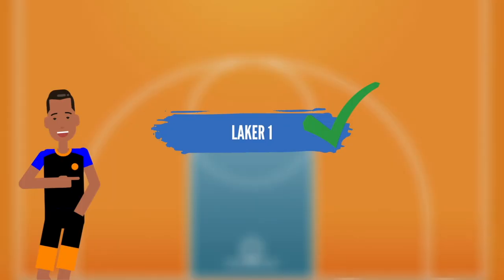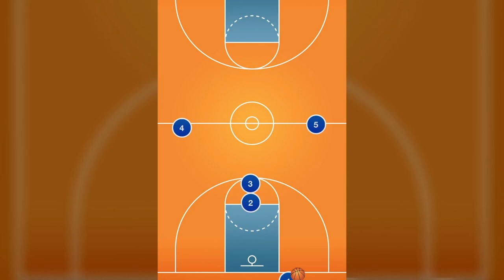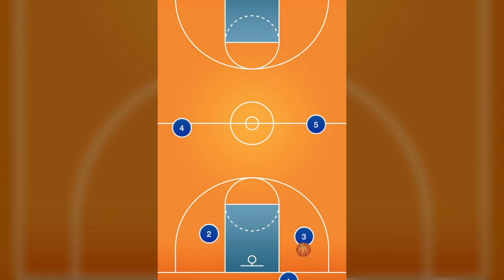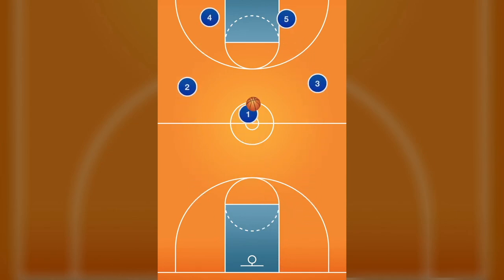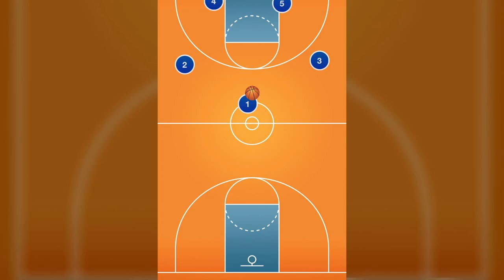The first option for Laker is to have the first player in the stack — in this case player 2 — turn around and set a screen for player 3. Players 2 and 3 will pop in opposite directions. After receiving the inbound pass, they will immediately look back to the inbounder cutting up the middle of the floor. Teams often forget about this player once the ball is inbounds.